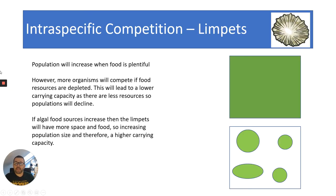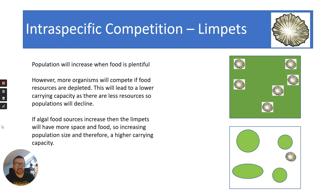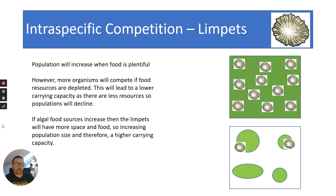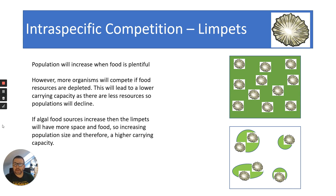When food is plentiful and there are large amounts of algae, populations will increase as per this basic animation - you can see it can sustain a large population. However, more organisms will compete if food resources are depleted. What will happen is you will get a lower carrying capacity and the population will decline. If algal food sources increase again, limpets will have more space and more food, increasing population size and therefore a higher carrying capacity. So they're constantly competing with each other for space and food.